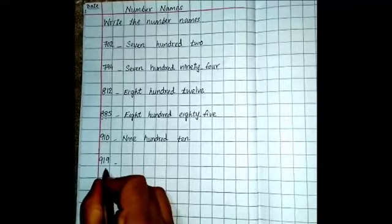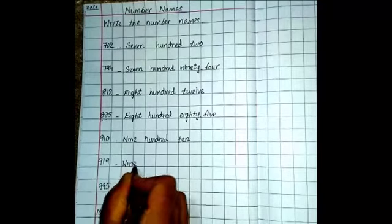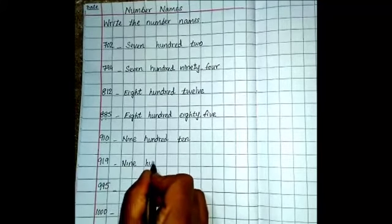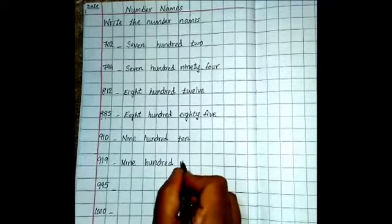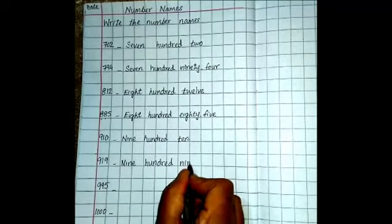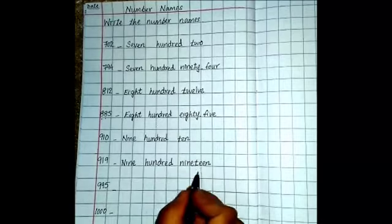Next number is 919. N-I-N-E-9, H-U-N-D-R-E-D-100, then write 19, N-I-N-E-T-E-E-N-19. 919.